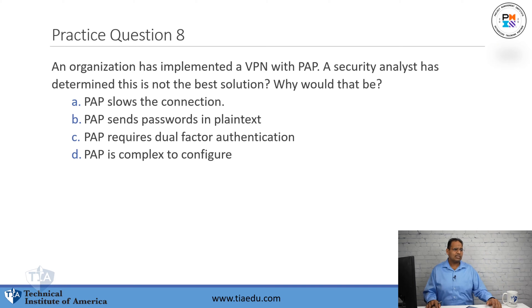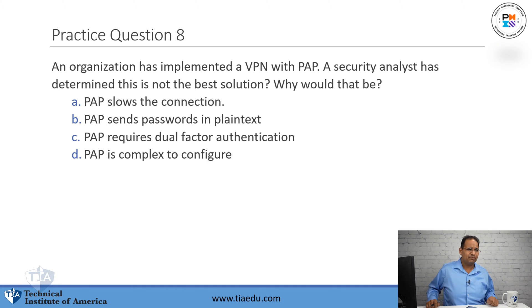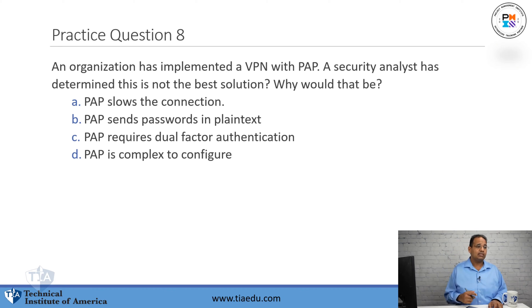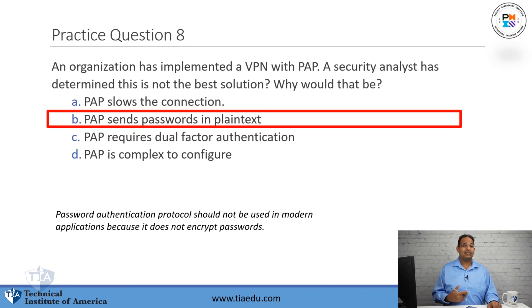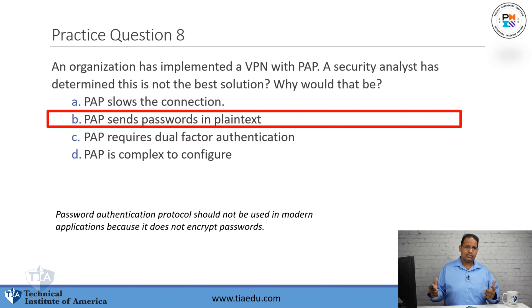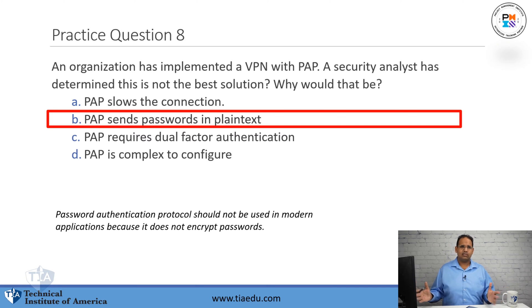Practice question eight: An organization has implemented a VPN with Password Authentication Protocol, or PAP. A security analyst has determined this is not the best solution. Why would that be? A. PAP slows the connection. B. PAP sends passwords in plain text. C. PAP requires dual-factor authentication. D. PAP is complex to configure. The answer is that PAP sends passwords in clear text. Having PAP on a VPN is like having an open VPN — anyone sniffing the traffic can get your password. Use CHAP if you want password-based auth since it encrypts the password, or better yet, use EAP so you can use certificates or smart cards.